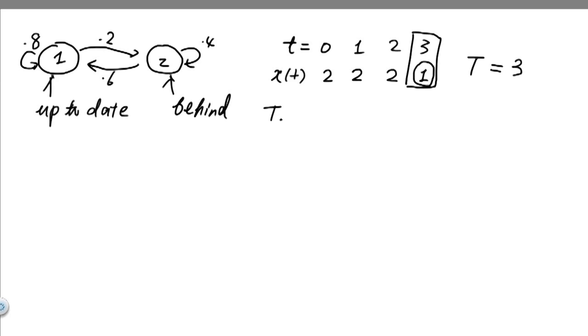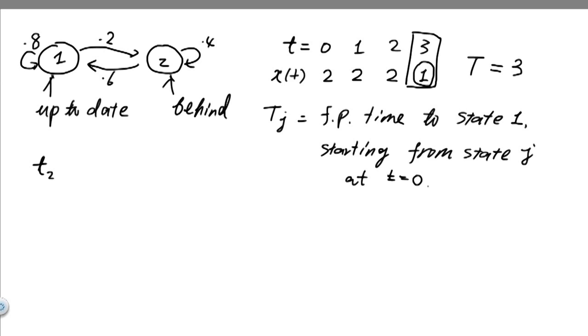More formally, we'll define tj as the first passage time to state one, conditional on that we start from state j at time 0. Now this quantity, of course, is random. Depending on the realization, we have different numbers.